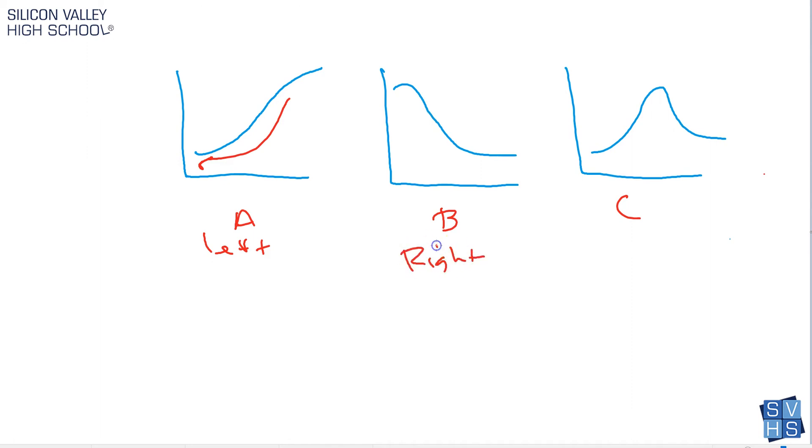This one is actually right skewed, right? Kind of you have these values strewn out here. And this is a classic zero skew. This is not skewed at all because it's perfectly symmetrical, kind of a bell curve.